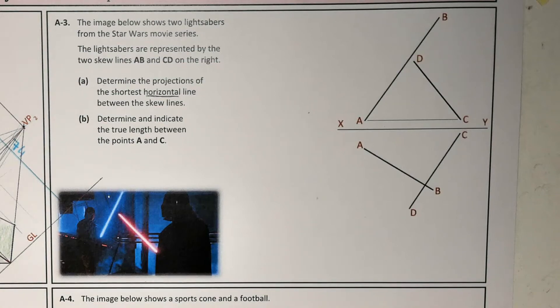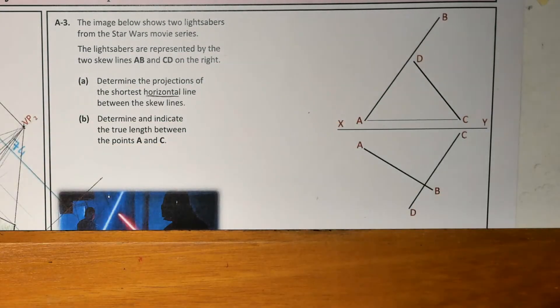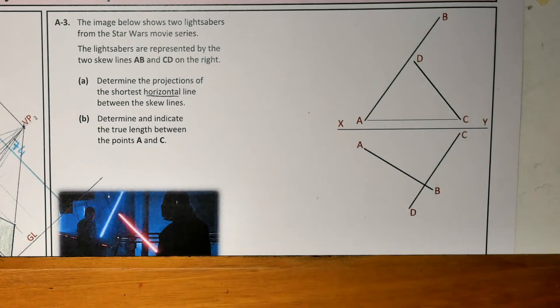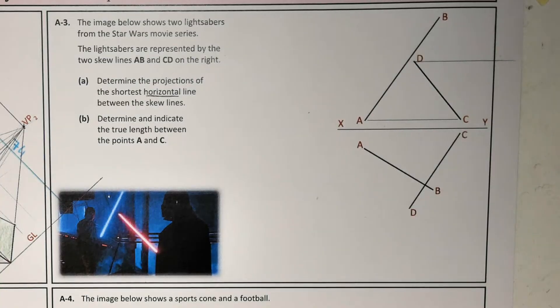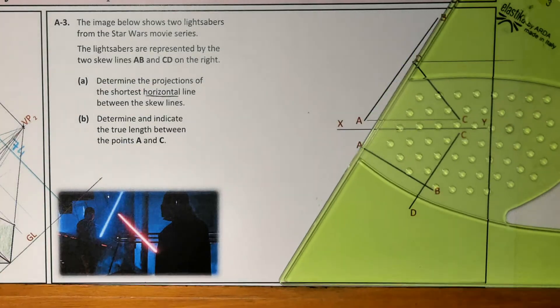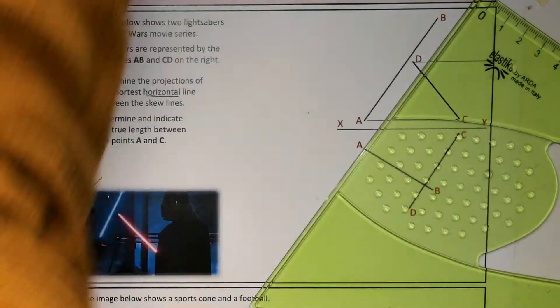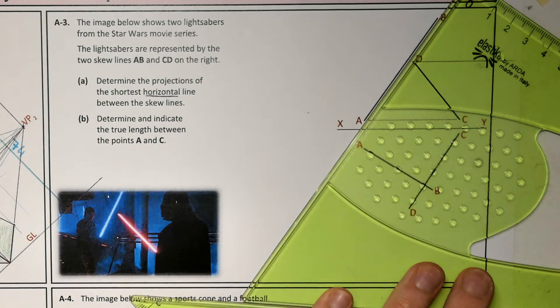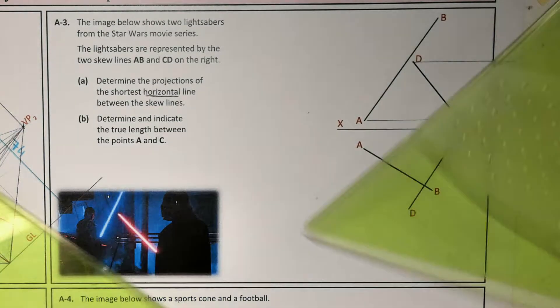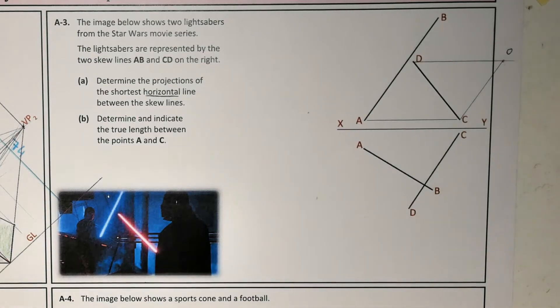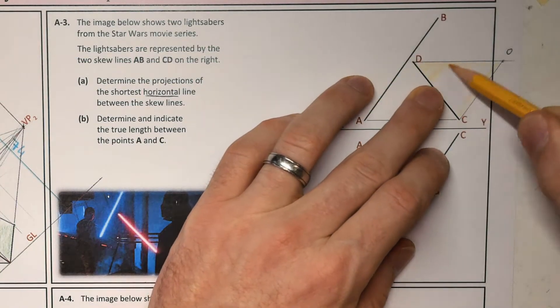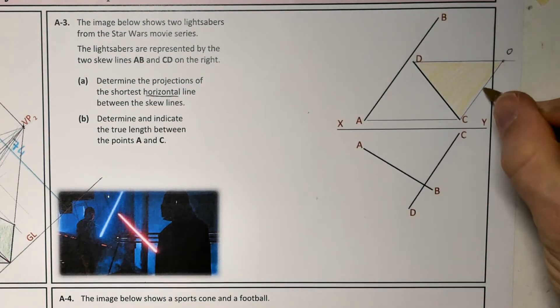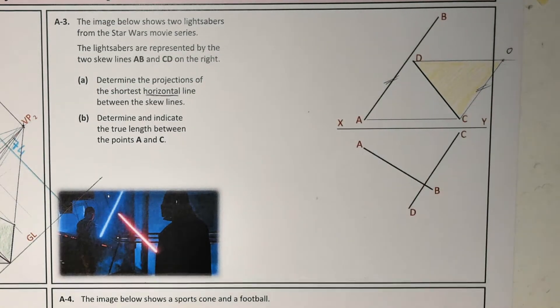The start of any skew lines question is going to be the same. We need to set up a plane. This plane is going to contain a horizontal line and then another line that's parallel to one of the other skew lines. To get this on the page nicely, I'm going to draw my horizontal line and my level line, and I'm going to draw a parallel line to AB from C. That's going to find me point O.